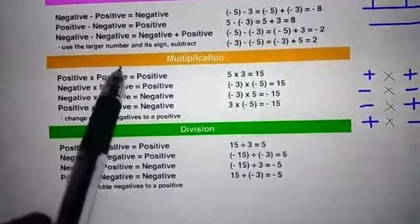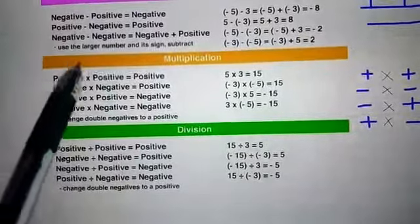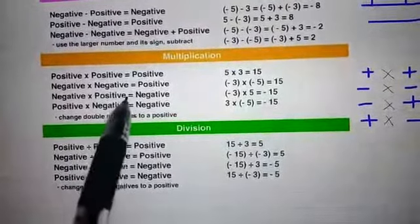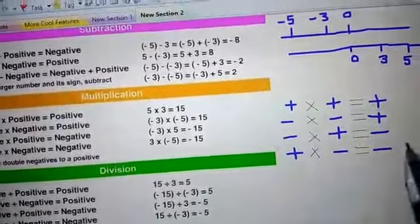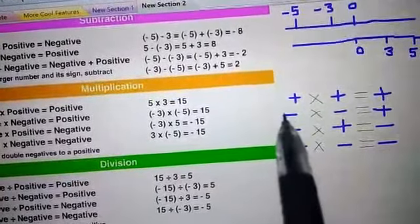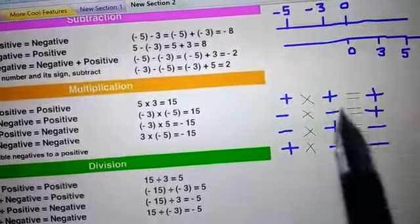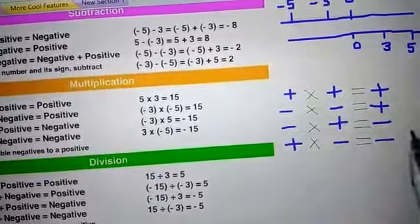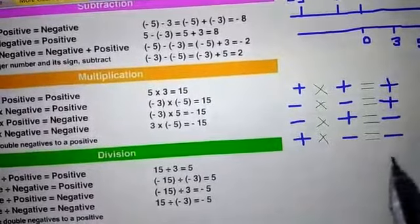Now we will see the third operation, which is multiplication. If you multiply positive into positive, the result will be positive. If you multiply negative into negative, the result will also be positive — in both cases the result is positive. If we multiply negative into positive, or positive into negative, the result will always be negative. Keep in mind: plus times plus equals plus, minus times minus equals plus, and whenever the signs differ, the result will always be negative.